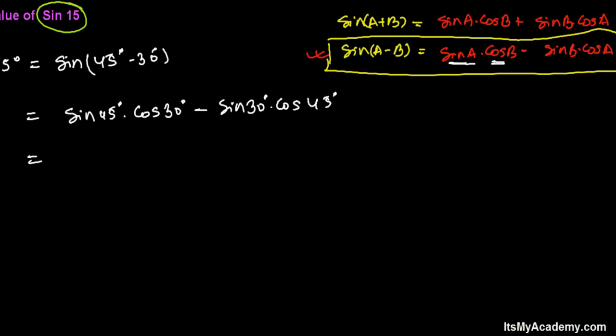So now we know the values of sine 45 degrees, that's 1 over root 2, and cosine of 30 degrees, that's root 3 over 2. Similarly, minus sine 30 degrees, that's 1 over 2, and cosine of 45 degrees is also again 1 over root 2.